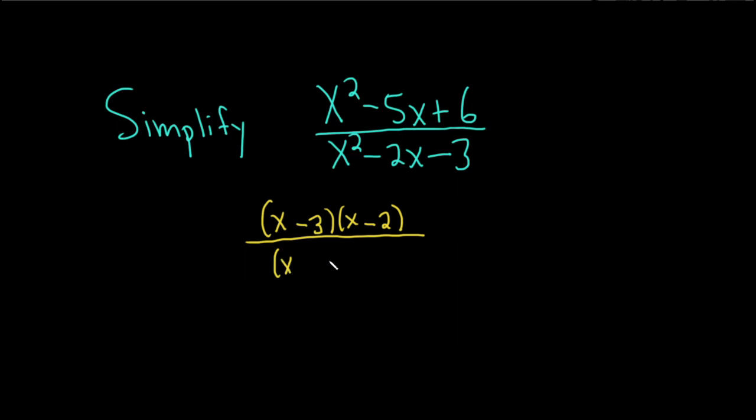Let's do the same thing in the denominator. We need two numbers that multiply to negative 3 and add to negative 2. So, 3 and 1, and they have to add to a negative number. So it'll be negative 3 and positive 1.